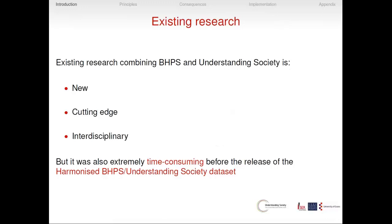There is quite a bit of research using Understanding Society and BHPS together, and that was true even before the release of the harmonized dataset. This research has three common characteristics: it is quite new, quite cutting edge, and interdisciplinary. These are positive things, but there is also a negative: it was extremely time-consuming. With this harmonized dataset we really want users to find it easier to use these two datasets together, which are designed to be used together.